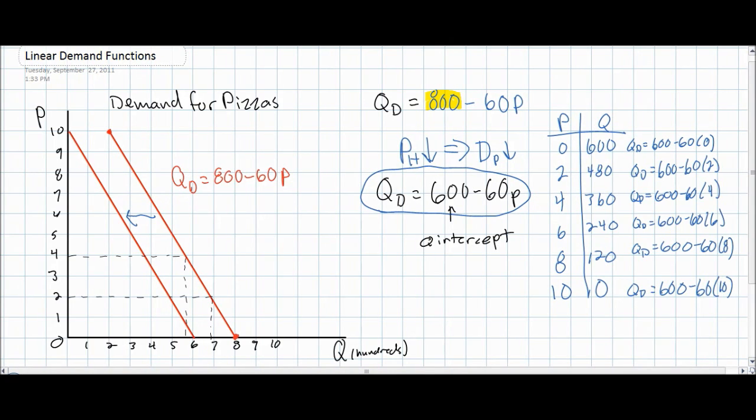Here's our new demand schedule for pizzas. Notice once again that as the price of pizzas rises, the quantity demanded for pizzas falls. Notice also that the rate at which the quantity demanded falls is the same as it was at our original demand function of QD equals 800 minus 60P. That, of course, is because the slope is the same.